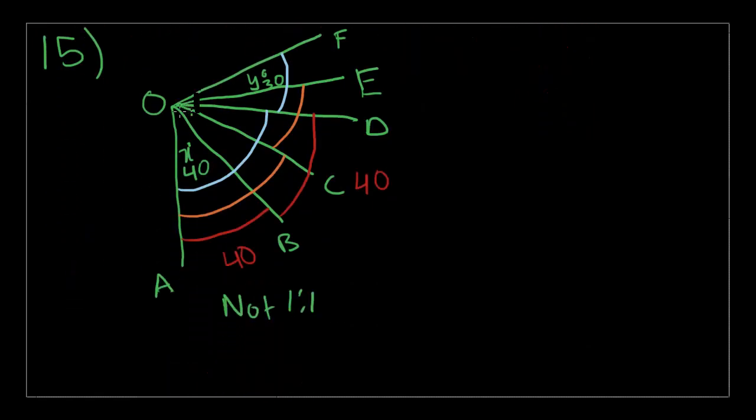We return to the problem where my video file corrupted. Number 15. Number 15 is this angle drawing, which says, in the figure above, 6 segments intersect at O. Line OD bisects angle AOF, line OC bisects angle AOE, and line OB bisects angle AOD. If X is equal to 40 and Y is equal to 30, what is the measure of angle BOE? And it's not to scale, which makes it even more confusing.